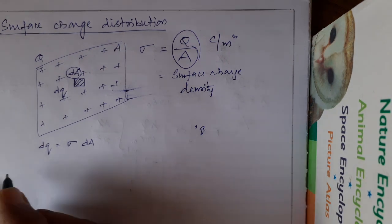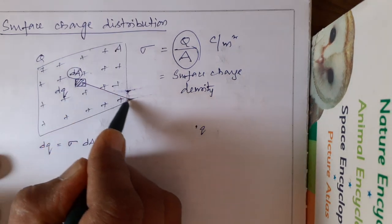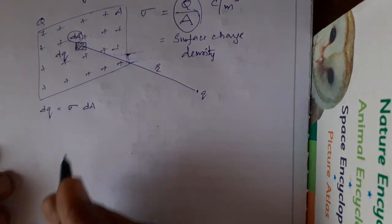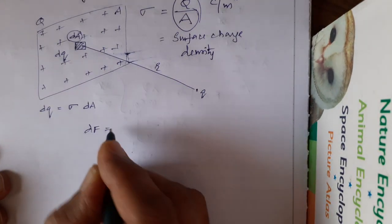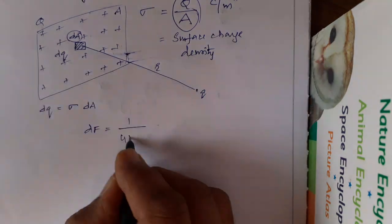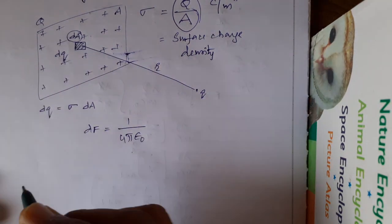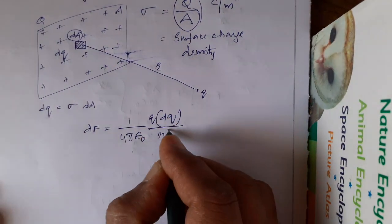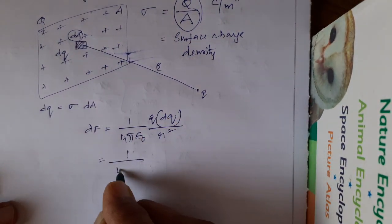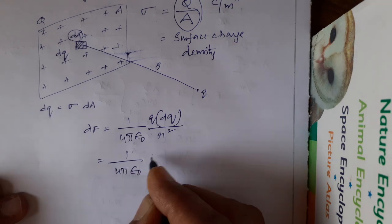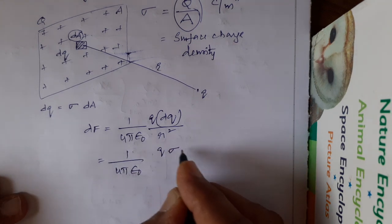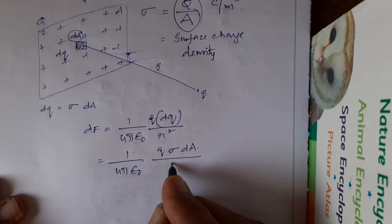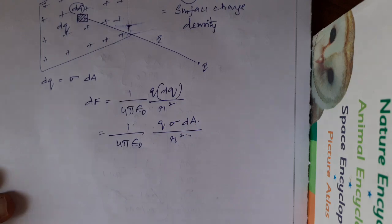What is the distance between these two? Let us say R. Now I write Coulomb's law. dF is equal to 1 upon 4 pi epsilon naught dQ into Q by R square. Here, 1 upon 4 pi epsilon naught Q sigma dA by R square.